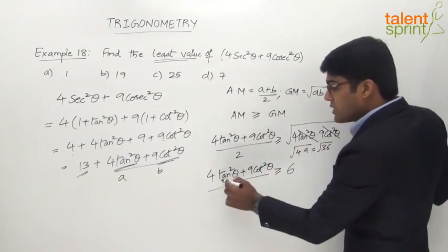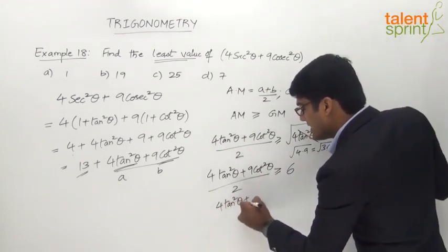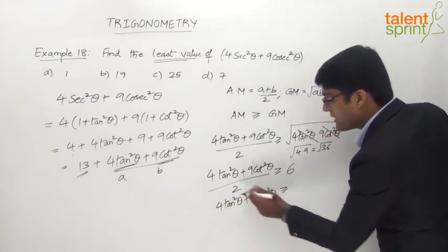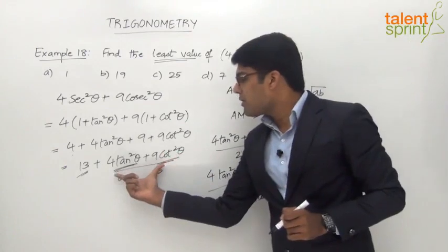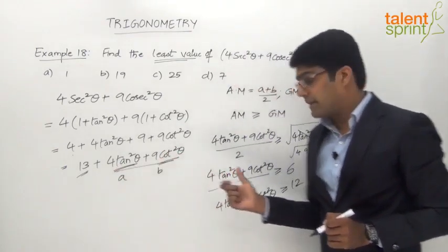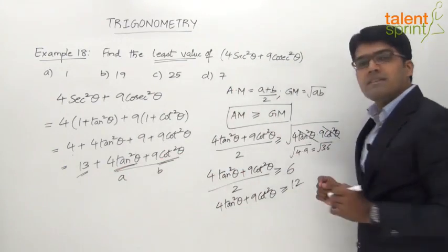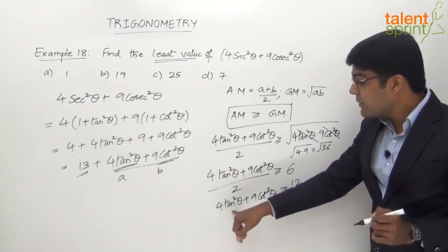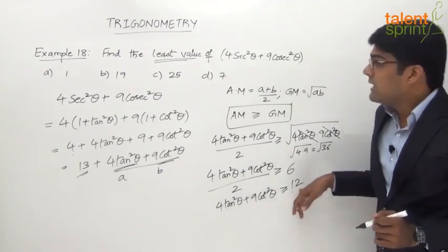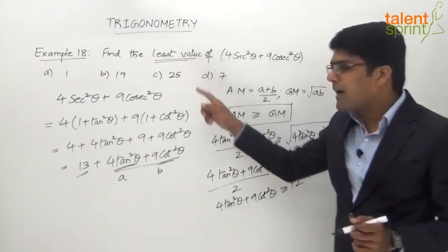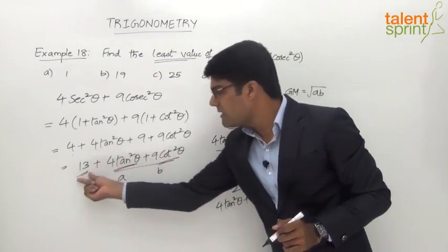From this, 4tan²θ + 9cot²θ ≥ 6 × 2 = 12. That is the remaining part of the given equation. Using the AM ≥ GM inequality, we have established that 4tan²θ + 9cot²θ must be greater than or equal to 12. We already have the constant 13 from the expansion.